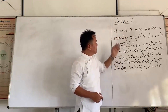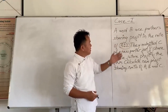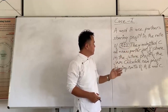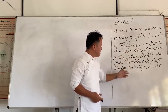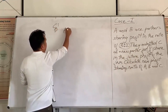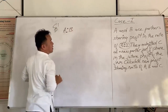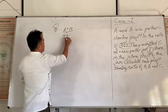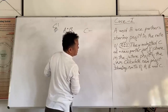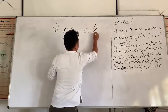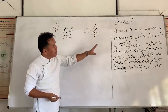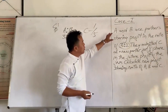Case number one: A and B are partners sharing profit in the ratio of 3 to 2. They admit C as a new partner who will get 1 by 5 share in the future profit of the firm. Calculate the new profit sharing ratio. So A and B are partners sharing profit in the ratio of 3 to 2, and they admit C as a new partner who will get 1 by 5 share.